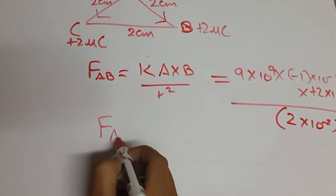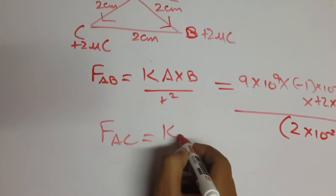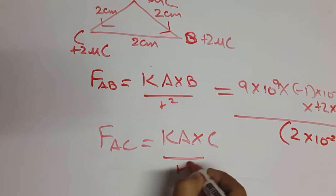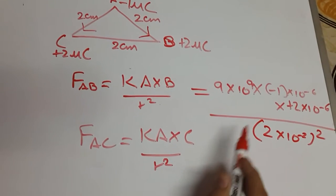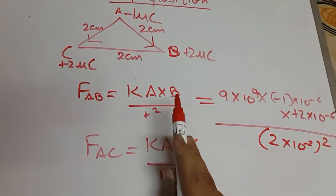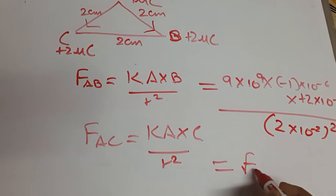So now we can write this like into 2 into 10 to the power minus 6 upon distance, square of distance between them which is 2 into 10 to the power minus 2 because of converting centimeter into meter. So after getting the value by solving this, we will just take the magnitude of the total force. Same goes with the force on A due to C which would be k into A into C upon R square. You can write the values by looking at the diagram and when you will get the answer which would be FAC.